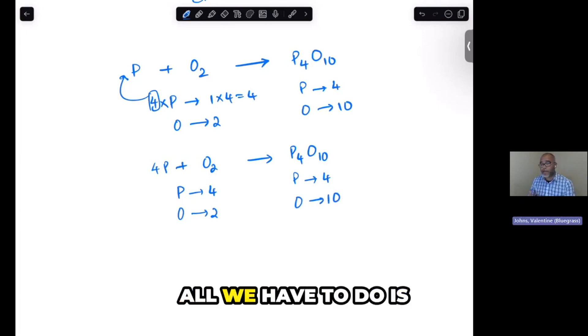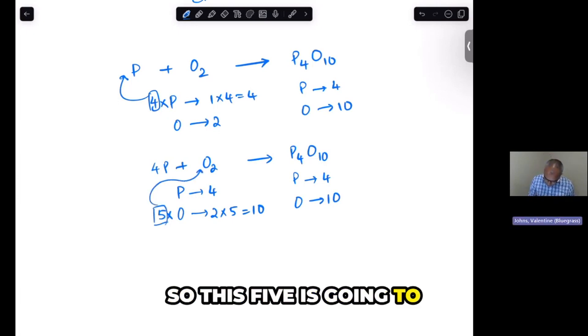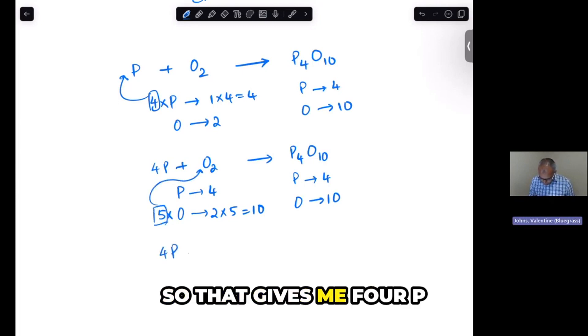Now, to balance the oxygens, all we have to do is multiply the left side with 5. So 5 times this oxygen gives me 2 times 5, which is 10. And I'm sorry, not both sides, balance the left side. That's what I meant. Alright, so this 5 is going to go up here, so that gives me 4P plus 5O2 gives me P4O10.